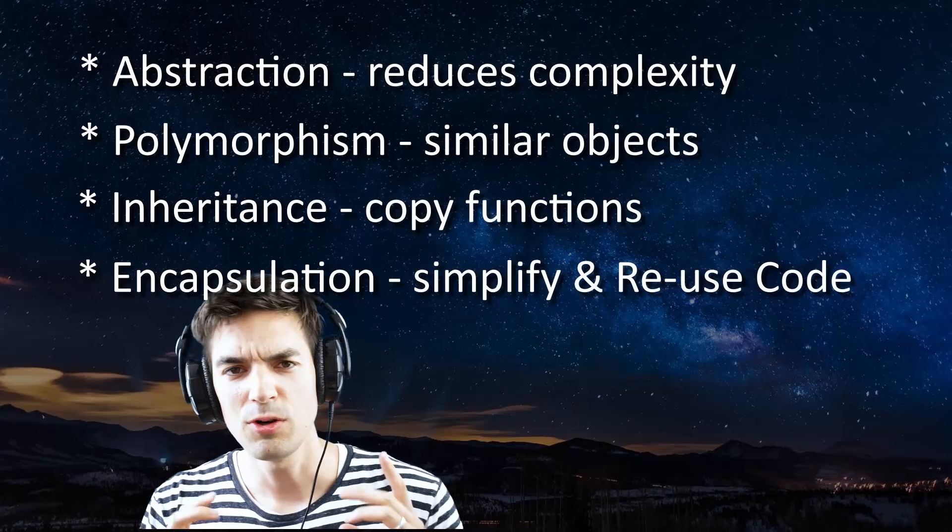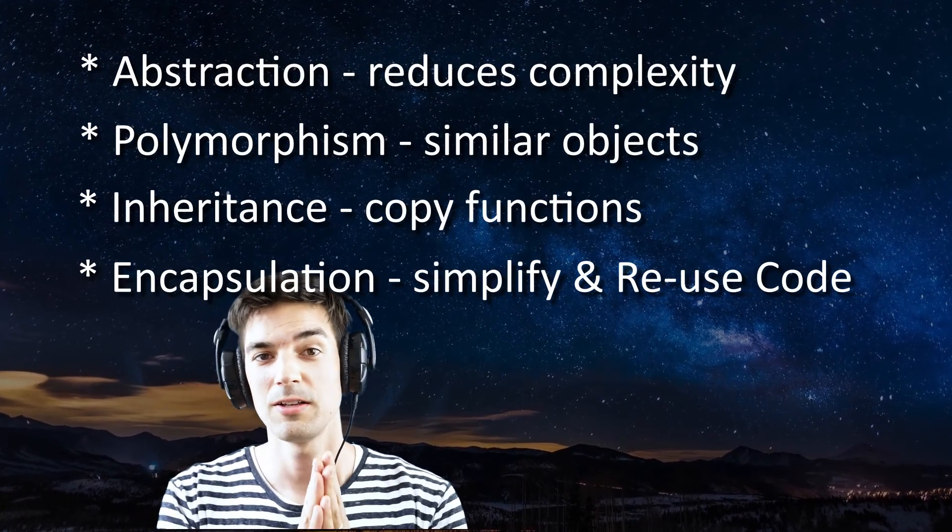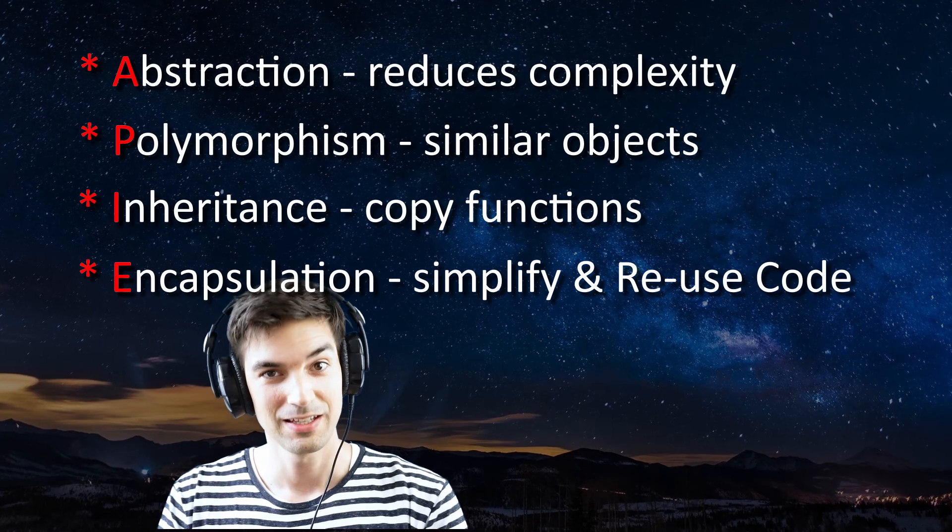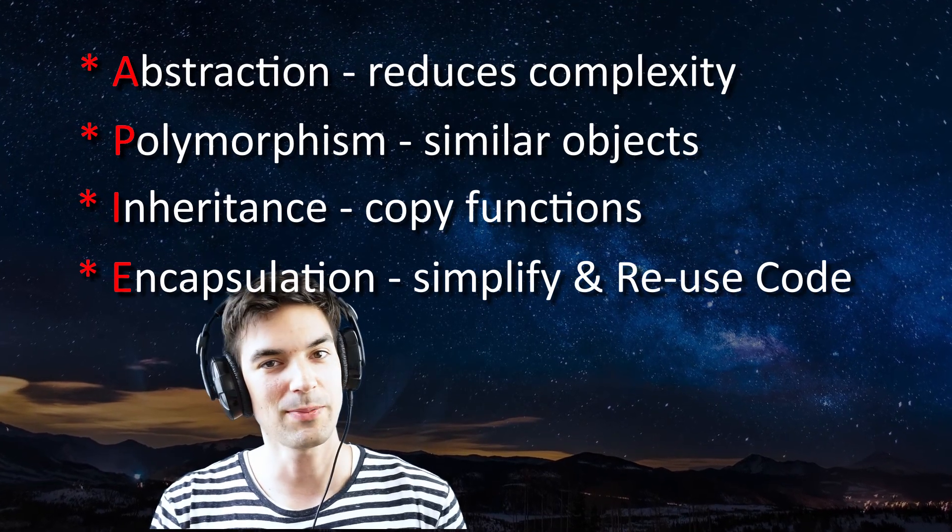Your homework today: first, remember A-PIE. Second, think about one object sitting around you and think about what kind of functions it could have. For example, this glass of water — it has a property for how full it is, a material property, and as methods it can break, get filled, and get emptied.